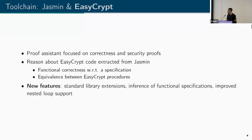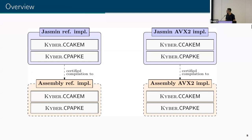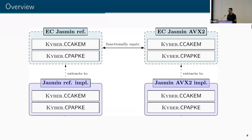What did we actually do? We provide two implementations in Jasmine — a reference implementation and an AVX2 implementation — that get compiled to assembly. This compilation is certified. We extract these Jasmine implementations to EasyCrypt and reason about them. We can either reason about them with respect to a specification, or prove that they are functionally equivalent. We take the Jasmine reference implementation and prove it correctly implements an EasyCrypt specification of the Kyber scheme.